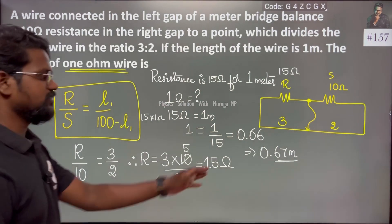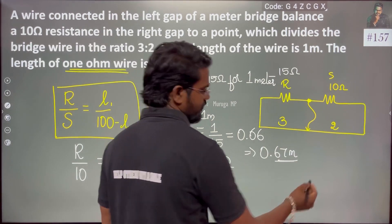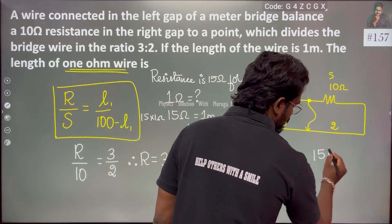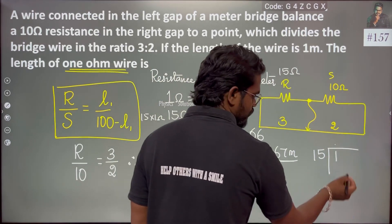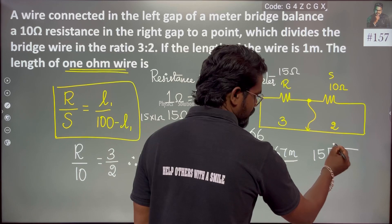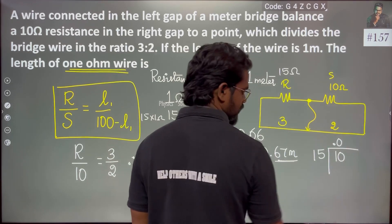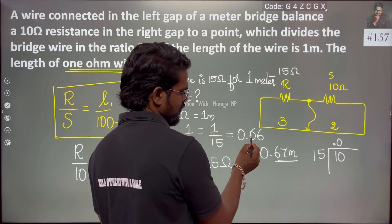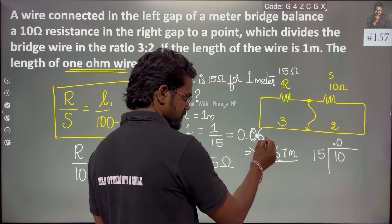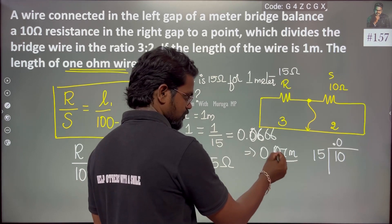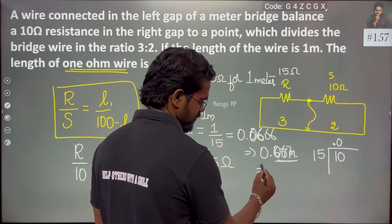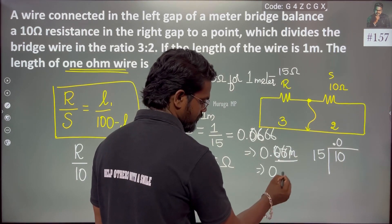So this is our answer — 1 by 15. You will get 0.6666, which is equal to 0.67 meter. So 0.67 meter will be my answer.